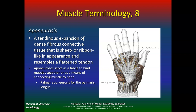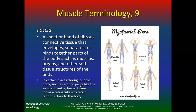Aponeurosis is a tendinous expansion of dense fibrous connective tissue that is sheet- or ribbon-like in appearance and resembles a flattened tendon. Aponeuroses serve as fascia to bind muscles together or as a means of connecting muscle to bone — for example, the palmar aponeurosis for the palmaris longus. Now let's take a look at your palmaris longus — some of you have this and some of you don't. Fascia is very important.